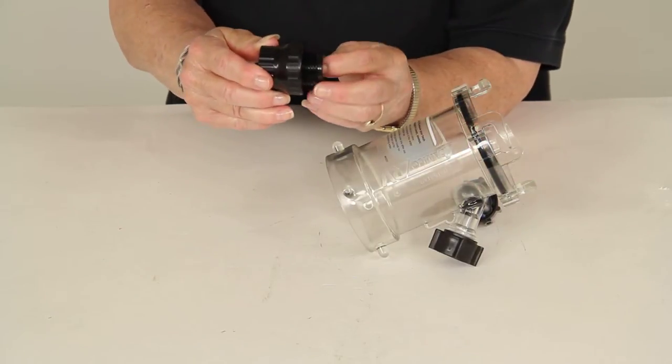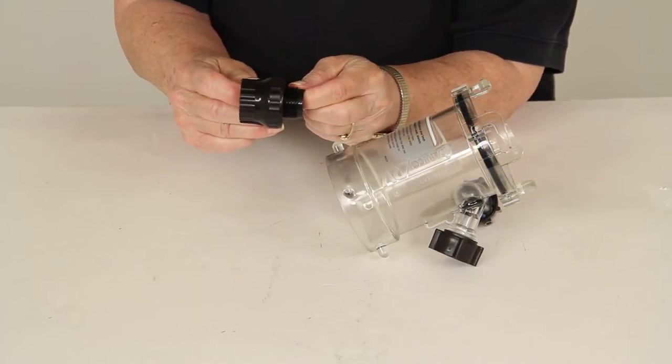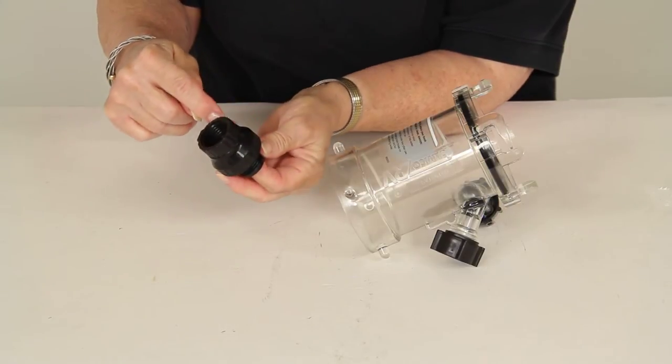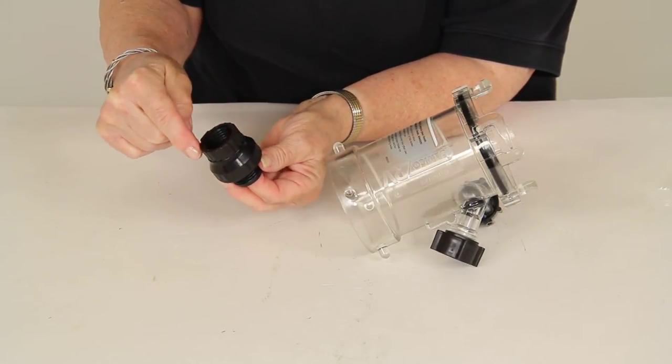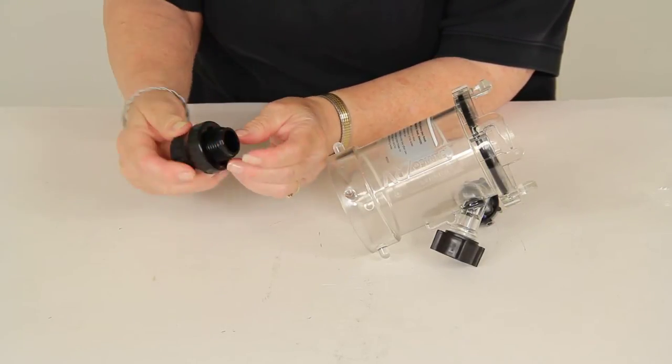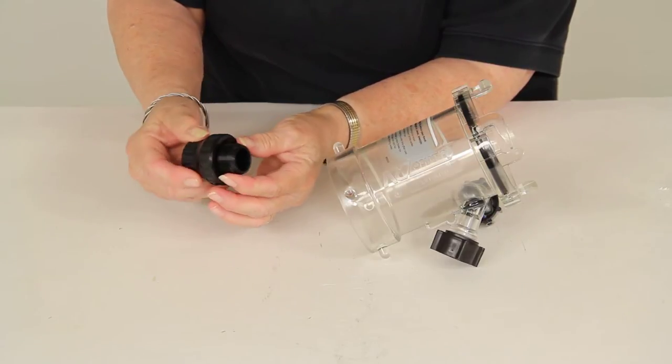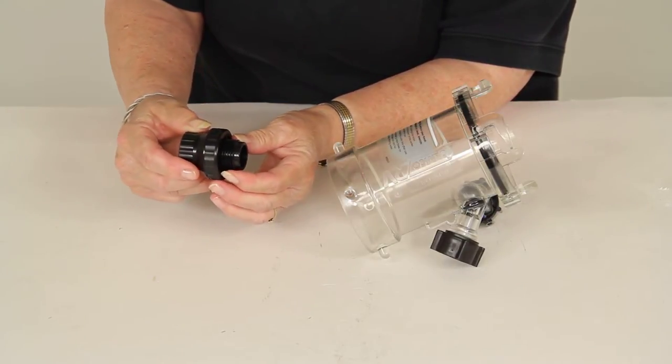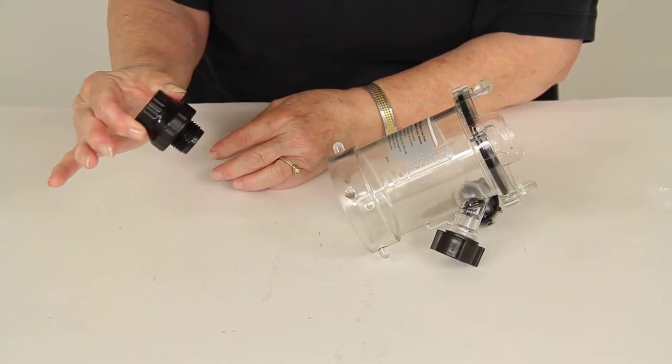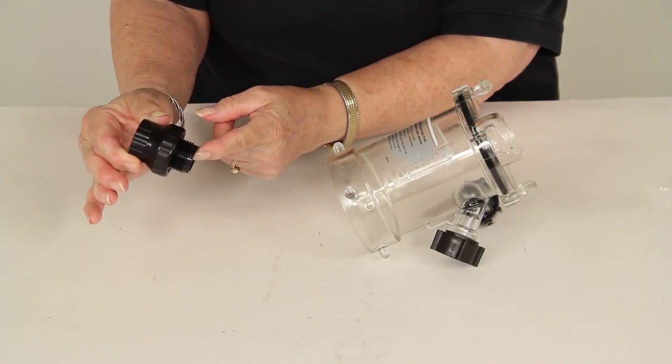You take this black vacuum breaker that comes with it and you attach the larger end to your water faucet. The smaller end here is for hooking up your garden hose. So you've got this attached to the water faucet and here's your garden hose here.